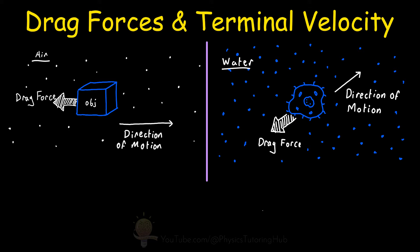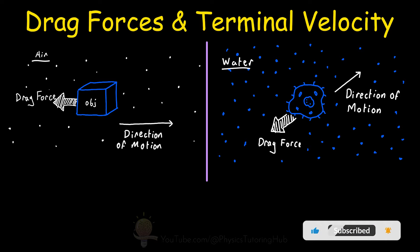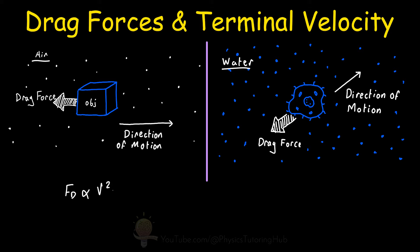Whenever we have an object moving through a gas or liquid, the object experiences a drag force. The magnitude of this drag force is dependent on the object's velocity. This dependency changes depending on the size of the object and the density of the gas or liquid it's moving through. For relatively large objects moving through air — things like cars, baseballs, or skydivers — the drag force is proportional to the square of the velocity.